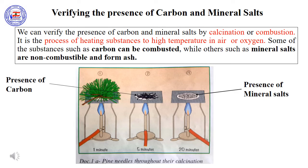We can also verify the presence of carbon and mineral salts by a technique called calcination or combustion. This technique depends on heating substances to high temperature in air or oxygen. Some substances, such as carbon, can be combusted — meaning carbon is able to react with oxygen to produce carbon dioxide. However, other substances, such as mineral salts, are non-combustible, which means they cannot react with oxygen. As a result, they form ash.